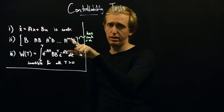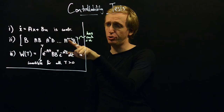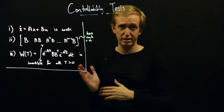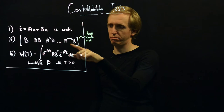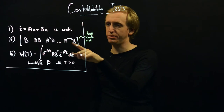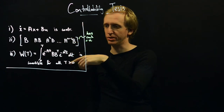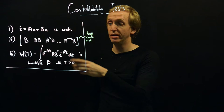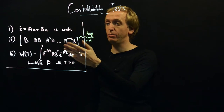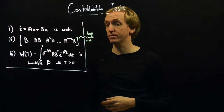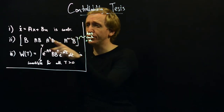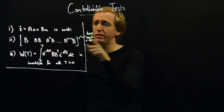N comes from the dimension of matrix A. If A is an N-by-N matrix, we go up to A to the N minus one. So if A is two-by-two, we go up to A to the one; if A is three-by-three, we go up to A squared, and so on. This is our controllability matrix.